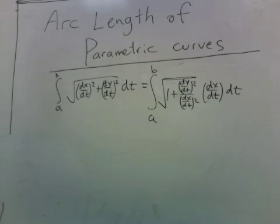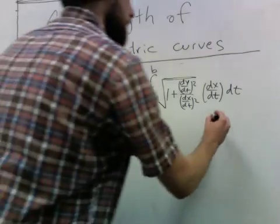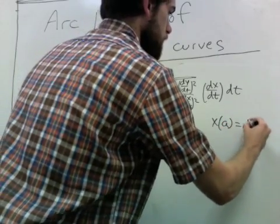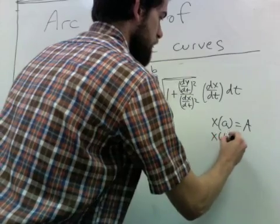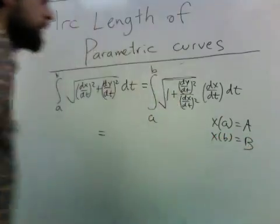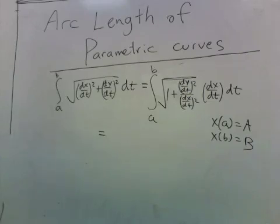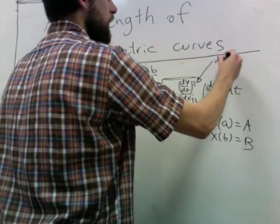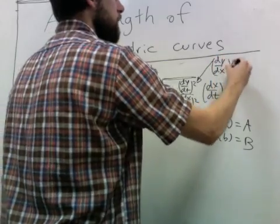Well, we can factor out the dx/dt when that derivative is positive, like this. And let's say x of A is capital A and x of B is capital B, and we notice that this part here is dy/dx squared.